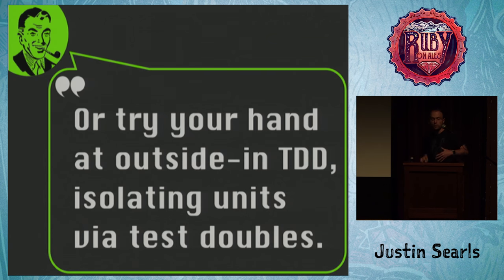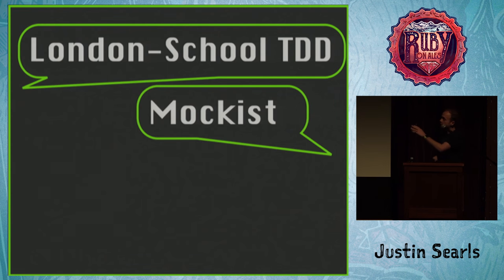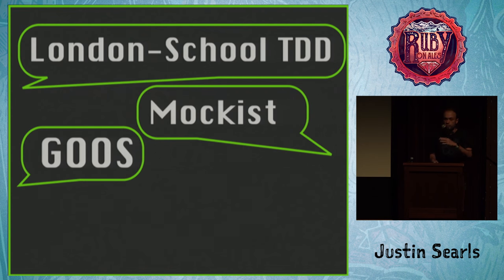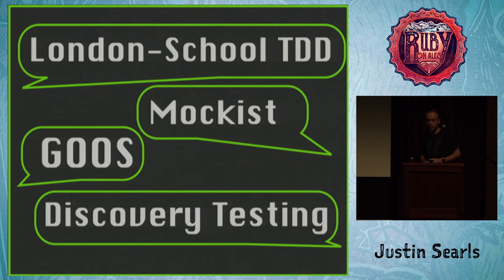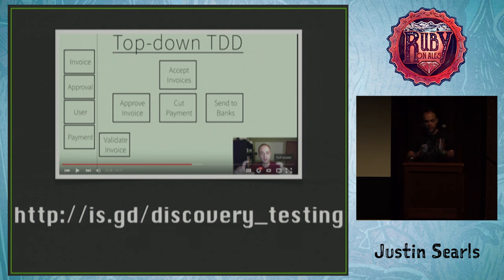We can also try our hand at outside-in test-driven development, where you work from the outside in but every layer has test doubles that fake out the layers below it. Some people call that London School TDD, or Mockist, or you might have heard of the book Growing Object-Oriented Software. I've lately started calling what I do in this area discovery testing. There's a free screencast series on our blog where I talk through how to do outside-in TDD if you're interested.